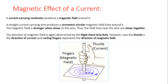We can determine the direction of the magnetic field produced around a current-carrying conductor using the right hand grip rule. The right hand grip rule helps us find the direction of the magnetic field. In this rule, the thumb shows the direction of electric current, and the curled fingers show the direction of the magnetic field.